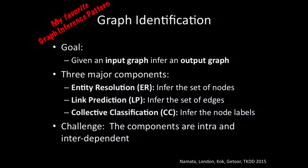My favorite graph analytic problem — I call it graph identification — takes all these problems and does them all at once. This is related to network reconstruction: you take some noisy observational network, and do the basic inference to figure out what the real, cleaned-up network is — the one you want to do your science on.